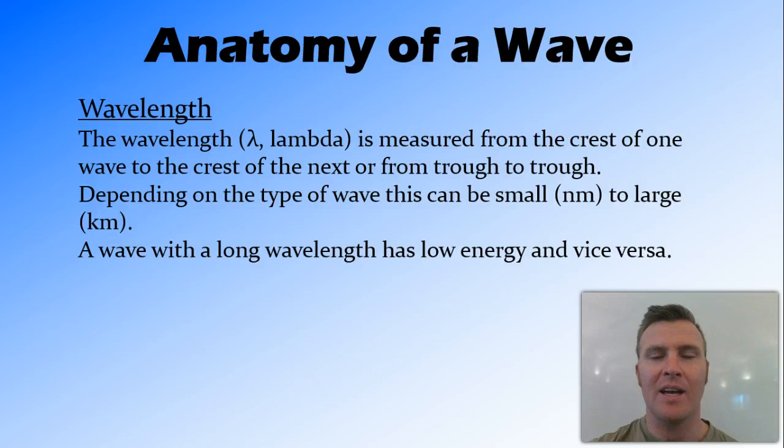The wavelength is the length of a wave. Its symbol is lambda, which is a Greek letter, and you measure it from the crest of one wave to the crest of the next wave, so from crest to crest. You can also measure it from trough to trough, and you'll get the same thing.